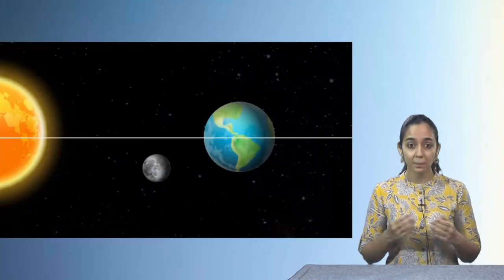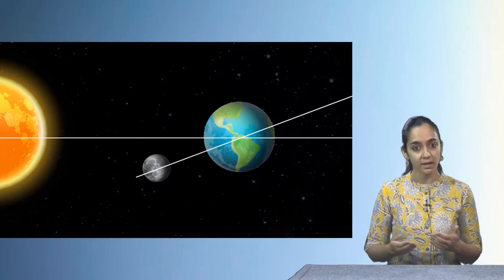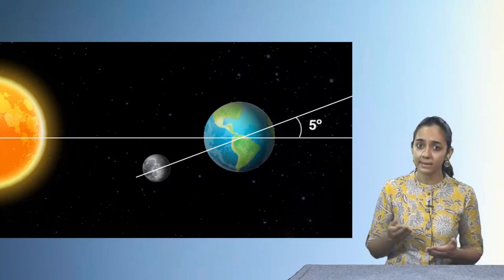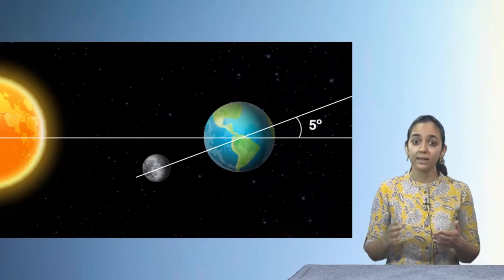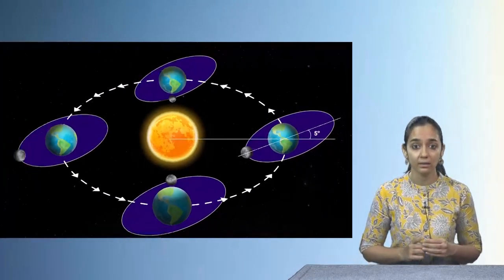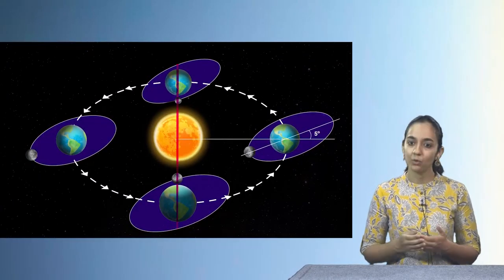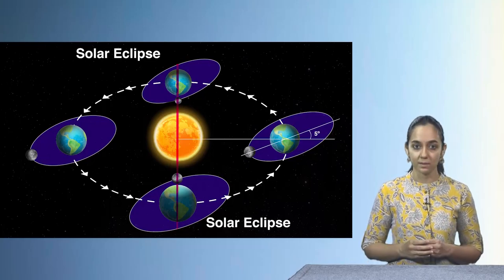Solar eclipses are not that frequent, even though from this description they might seem like they should be. This is because the plane on which the moon revolves around the earth is slightly tilted with respect to the plane in which the earth revolves around the sun. Only when these planes align do we observe a solar eclipse. Depending on the relative positions of the moon, solar eclipses can be partial, total, or annular.